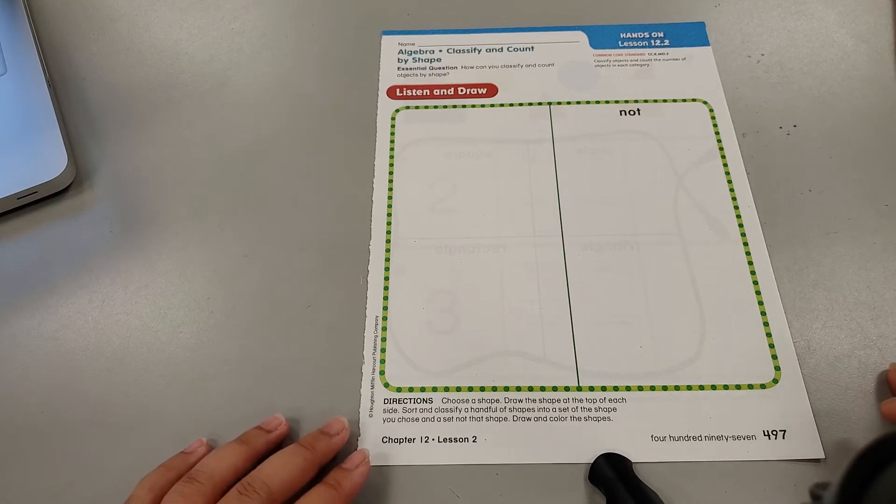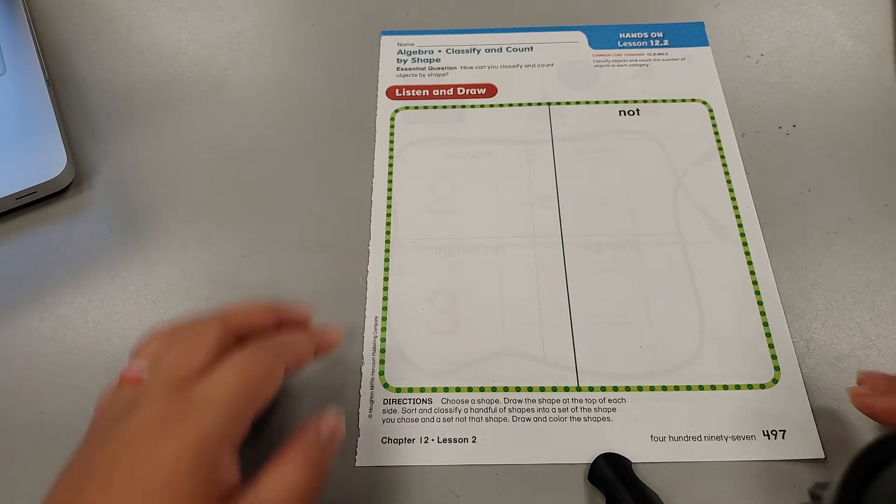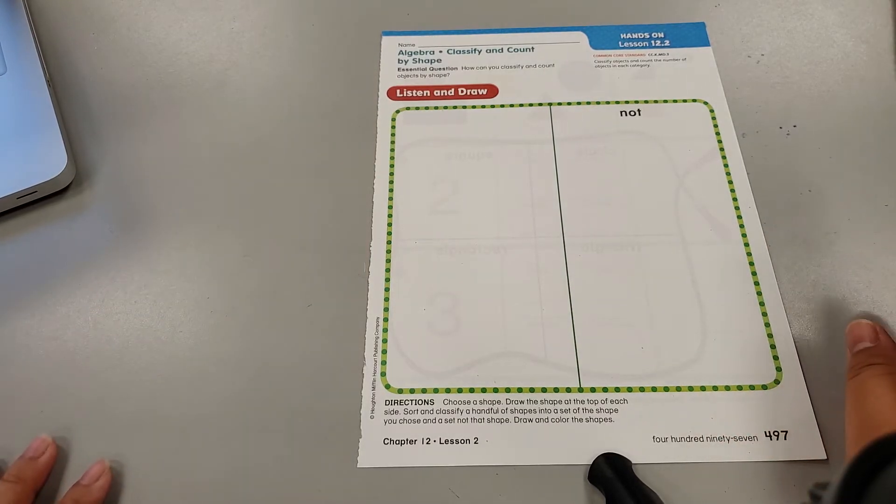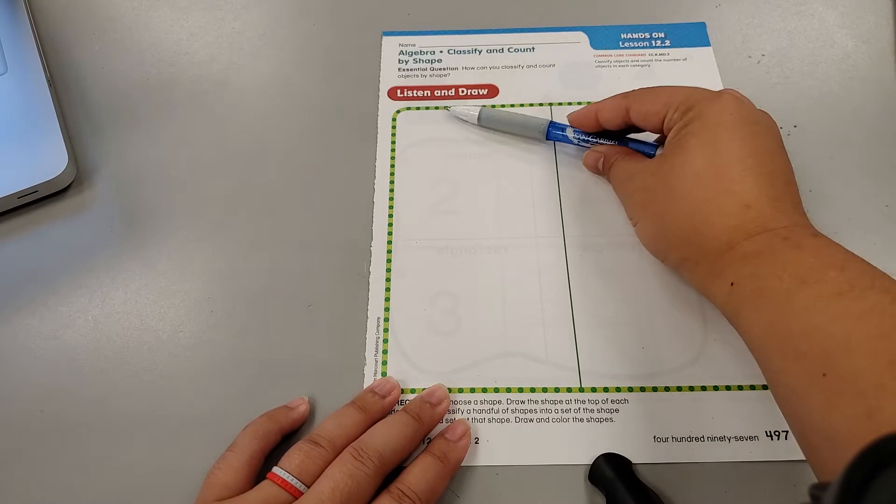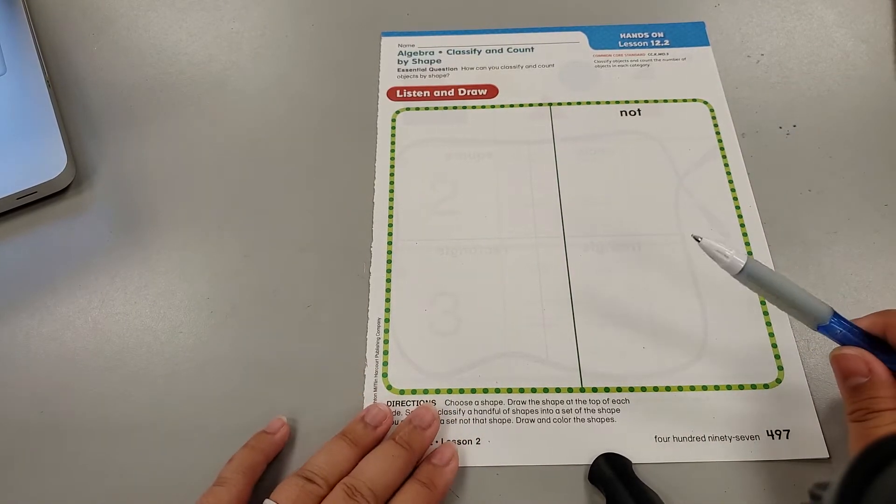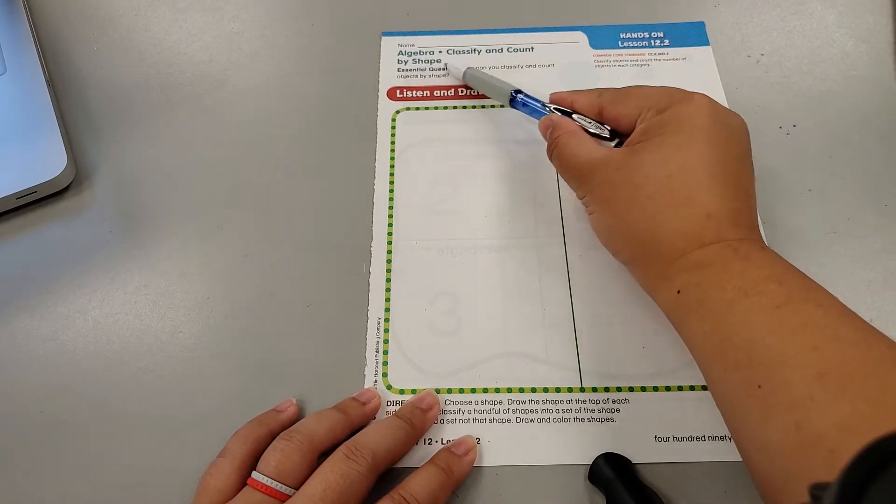All right, math time! Yesterday we classified and sorted by color, and we had the clouds, if you remember, on the first page, and we had to choose clouds. For example, Mrs. Garosby's video picked red and not red. Well, today, my friends, we're going to be classifying or sorting by shape.